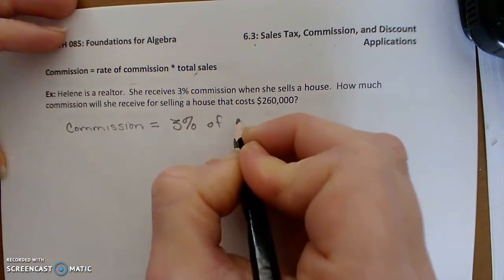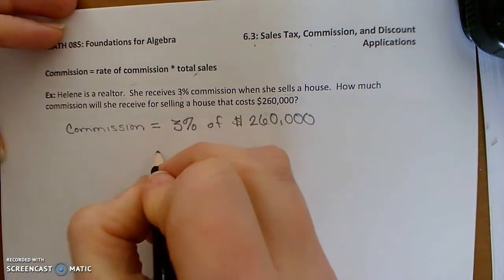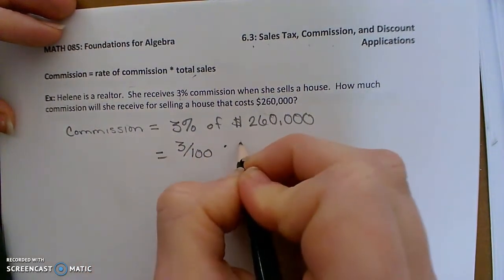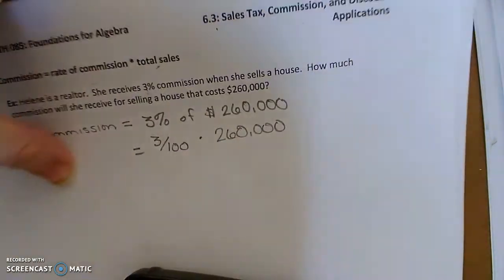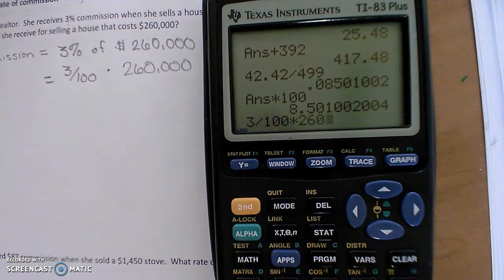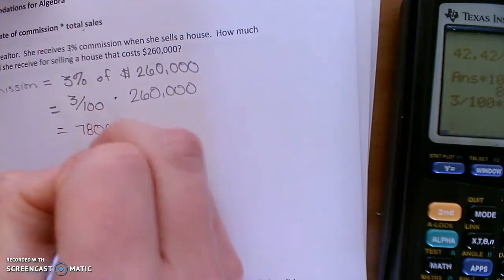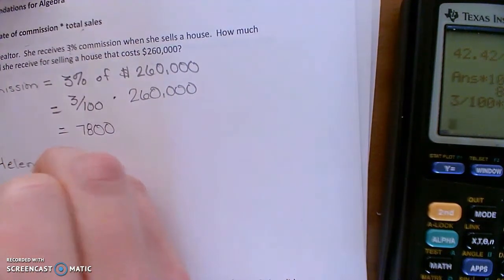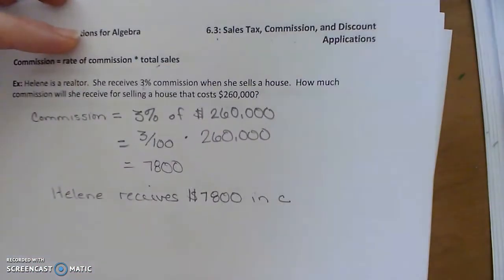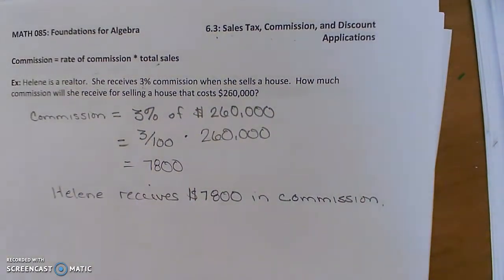Her commission will be 3% of $260,000. What I'll type into my calculator is 3% — or 3 over 100, which is 0.03 — times $260,000. So 0.03 times $260,000 gives me $7,800. So Helen receives $7,800 in commission for selling one house — probably worthwhile to sell multiple houses!